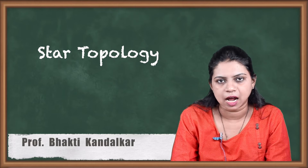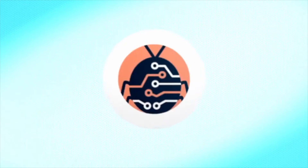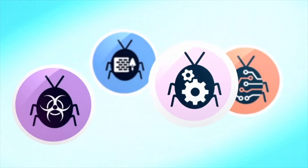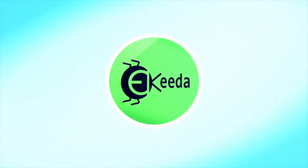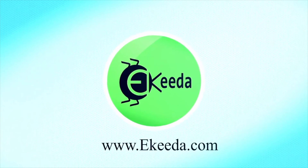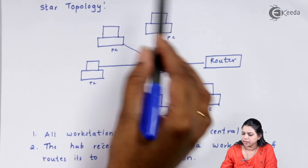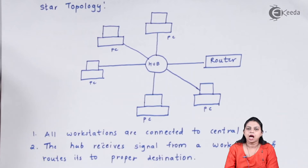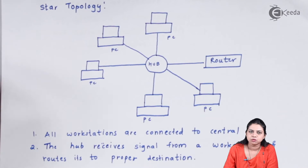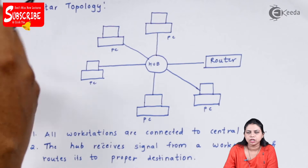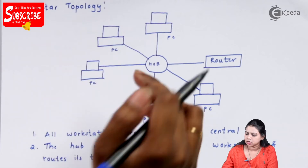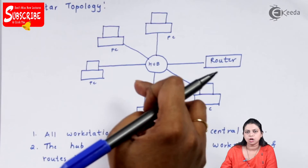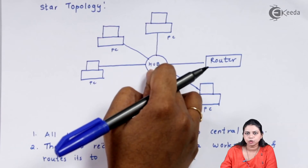Now we will have a look at the star topology. If you look at the diagram here, all my nodes are connected to a hub. Hub is a device which sends or receives the signal to the appropriate destination. All my five nodes are connected to the hub.